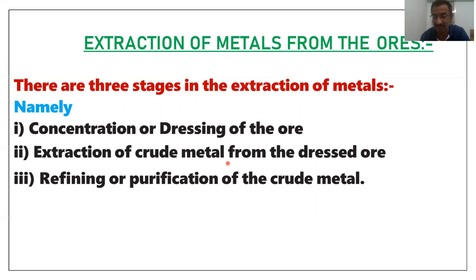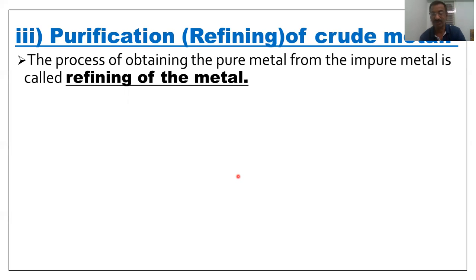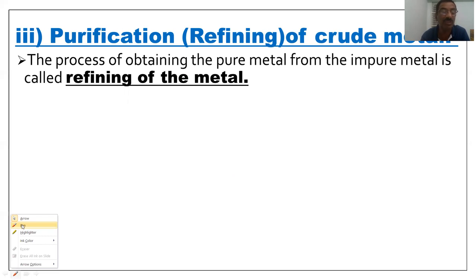What is meant by refining of the metal? The process of obtaining the pure metal from the impure metal is called refining of the metal.